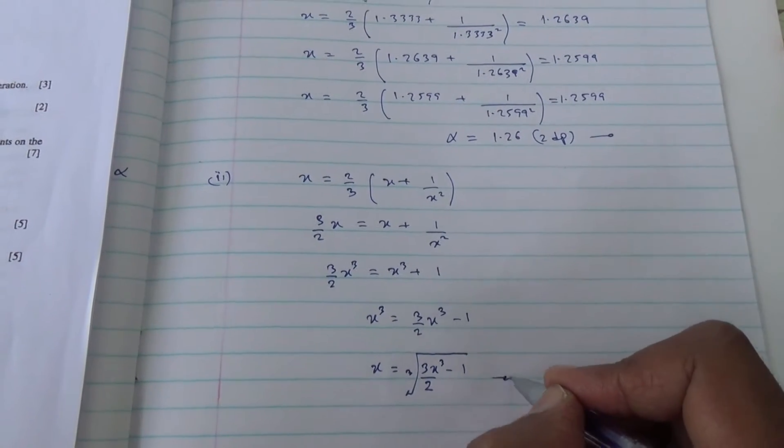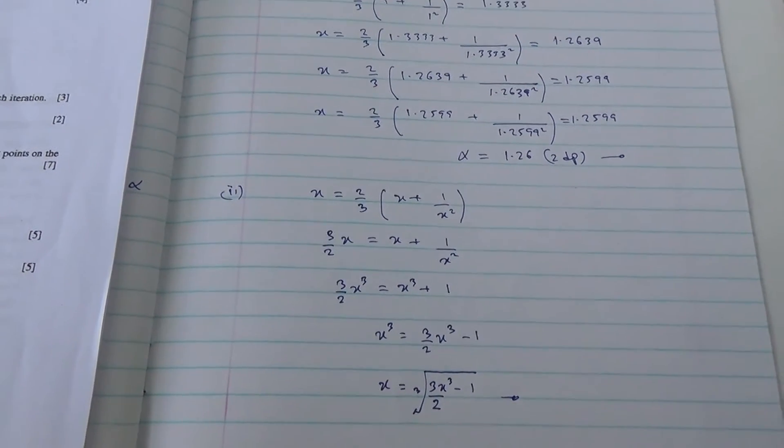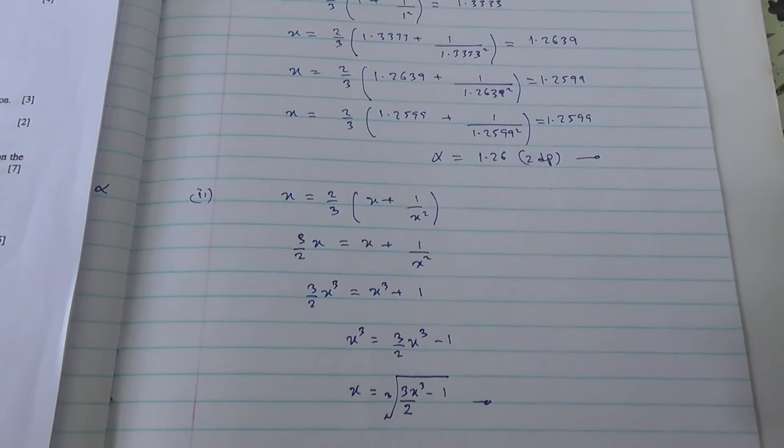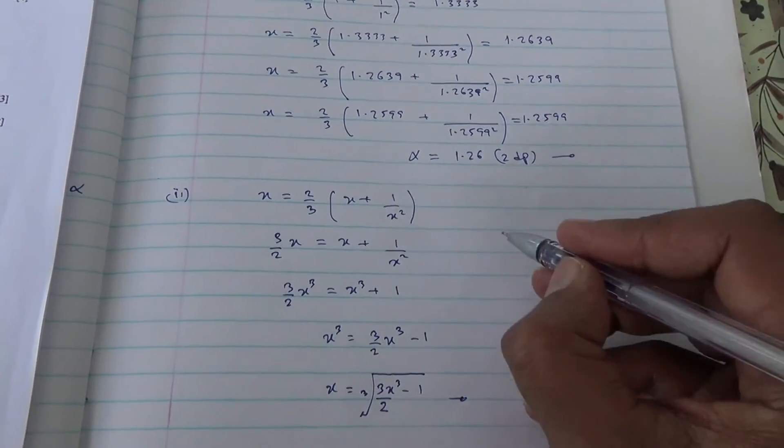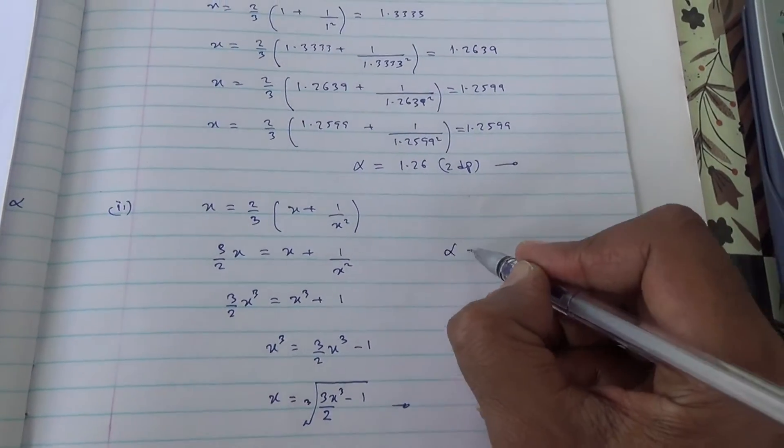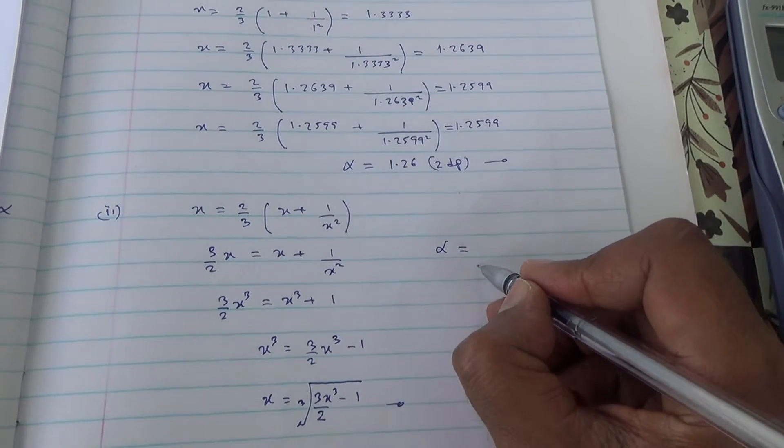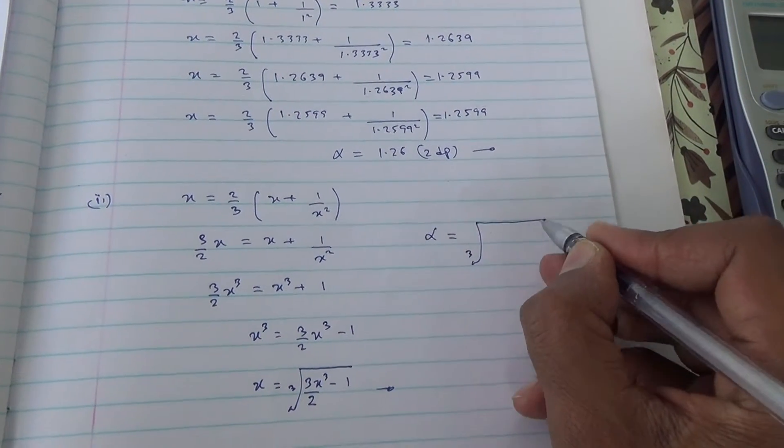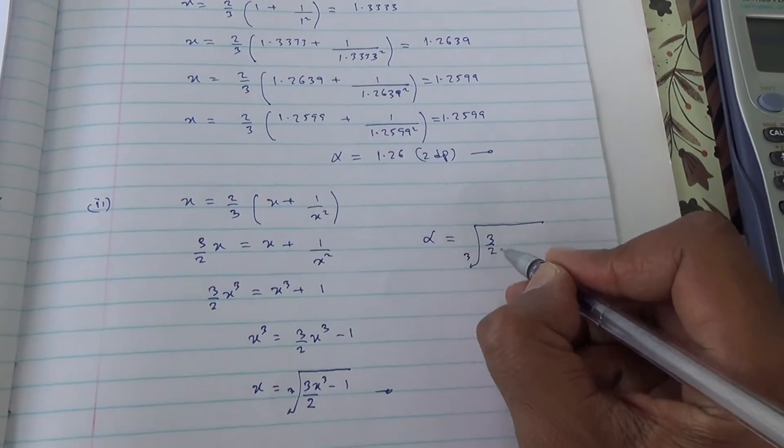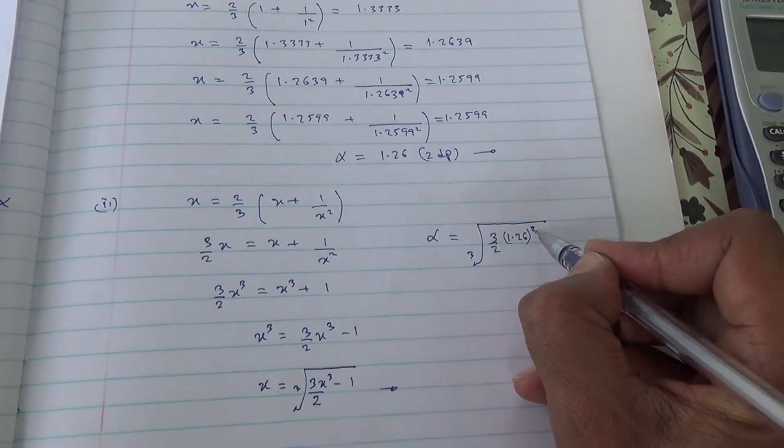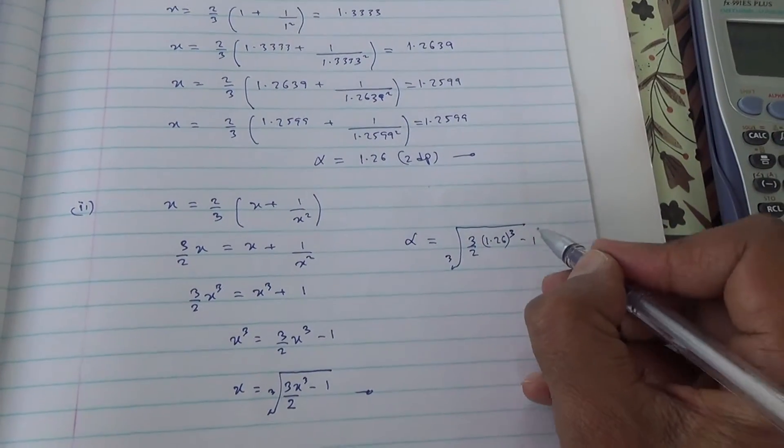Now here's your equation, your stated equation. And what about now finding the exact value of alpha? So if you find the exact value of alpha, we just simply need to replace this into the equation. So the cube root of 3 over 2x cubed, so x is 1.26, 1.26 cubed minus 1.